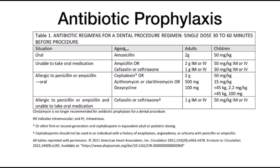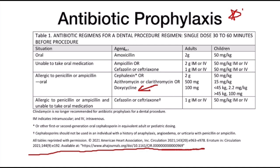Clindamycin has been removed due to frequent and severe adverse drug reactions — specifically its association with community-acquired Clostridioides difficile infection. Doxycycline has been added as a replacement in the recent 2021 AHA guidelines. The AHA article will be linked in the description box. Doxycycline is recommended as an alternative for patients unable to tolerate penicillin, cephalosporins, or macrolides. Short-term use of doxycycline — less than 21 days — has not been associated with tooth discoloration. Antibiotic prophylaxis should be given 30–60 minutes before the procedure.